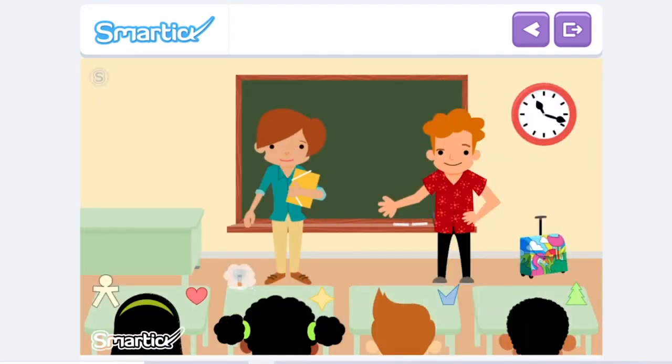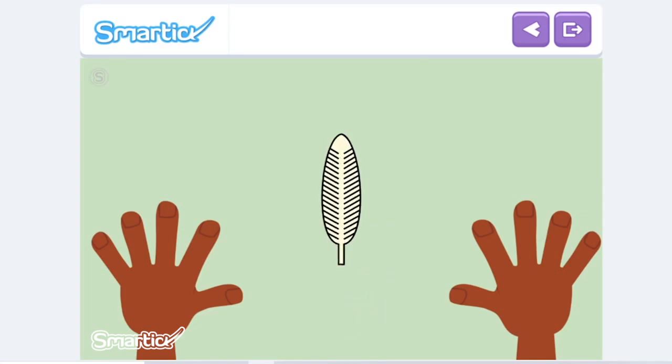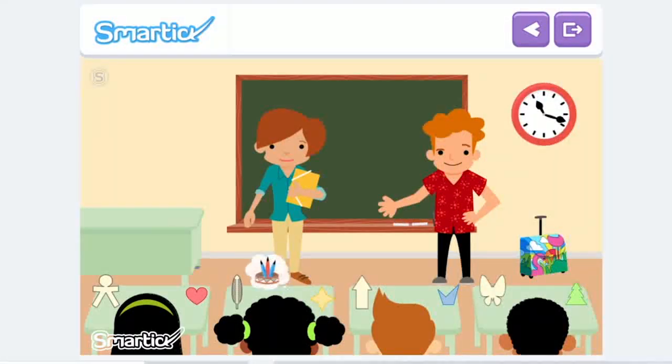Zoe decides to make a feather. She drew half on the fold of the paper, and then she cut it out. She even cut the little hairs on the feather. Once she unfolds it, it looks great and so real! So she decides to make a few more feathers to create a headdress. She wants to get home quickly to start.